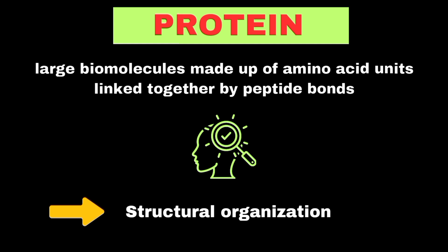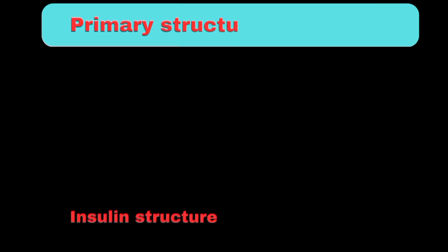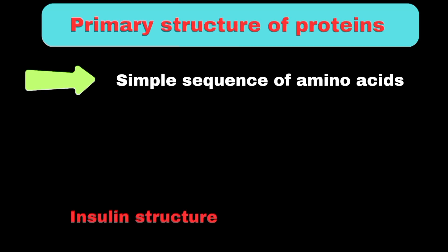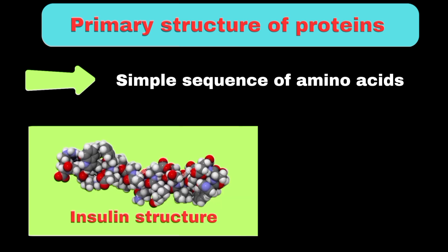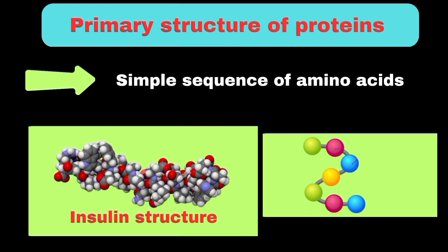The primary structure of proteins is simply the sequence of amino acids linked together. For example, insulin, a protein hormone, has a specific sequence of 51 amino acids. Each amino acid has an amino group at one end and a carboxyl group at the other end, with a unique side chain that gives it specific properties. When these amino acids link together, the amino group of one reacts with the carboxyl group of another, forming a peptide bond.